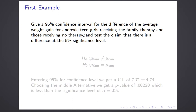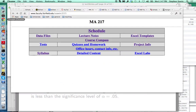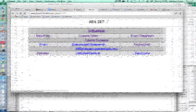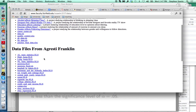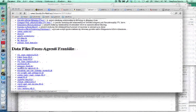Let's do our first example. We want a 95% confidence interval for the difference in average weight gain for anorexic teen girls receiving the family therapy versus no therapy, and we'll test the claim that there is a difference in these means at the 5% significance level. We start with the null and alternate hypothesis. The null hypothesis is that the means are equal; the alternate is that they're different. On my webpage, I'm going to go to data files and scroll down to anorexia fixed.